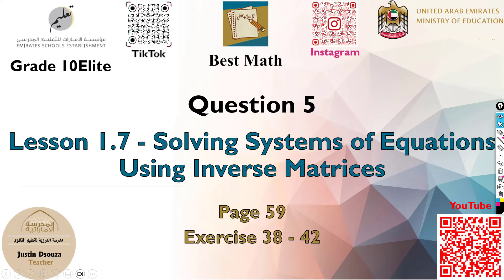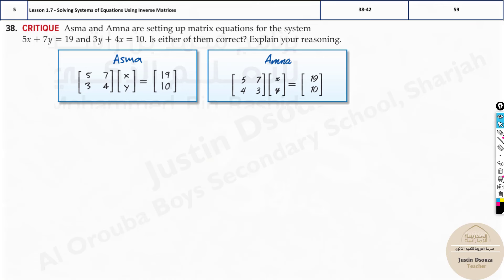The question is solving systems of equations using inverses of matrices. But this question is more like word problems. You need to read and understand what they want, and it's a reasoning type of problem. Let's read this. Asma and Amna are setting up matrix equations for the system 5x plus 7y equals 19 and 3y plus 4x equals 10. Is either of them correct? Explain your reasoning. First, let's just solve it up.